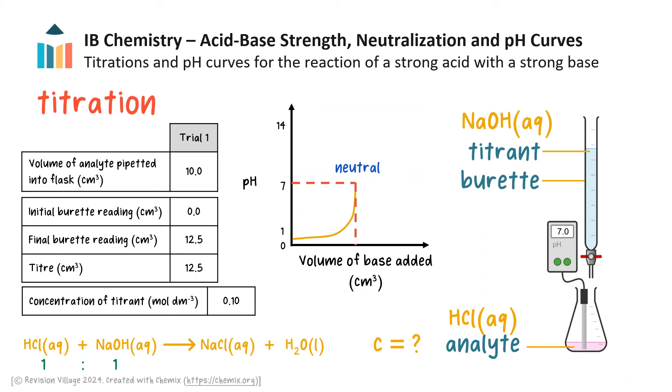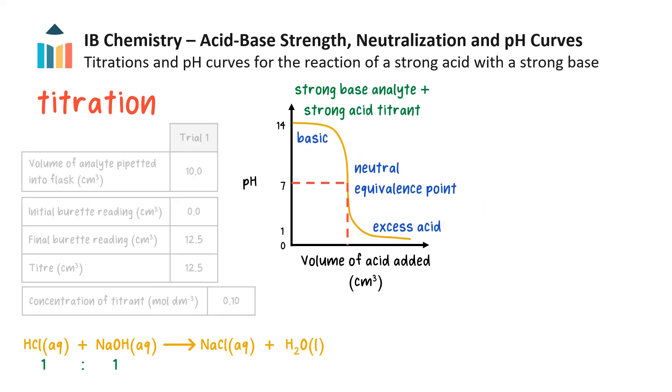The pH at equivalence point will be 7 or neutral for the reaction of a strong acid with a strong base. Notice on the curve there is a sudden increase in gradient as equivalence point is reached. Then, if excess base titrant is added and the pH is recorded, the curve would extend like this. This is the typical shape of a pH curve for the titration of a strong acid analyte with a strong base titrant. Incidentally, if the analyte was a strong base and the titrant a strong acid, the curve would look like this, starting with a high pH, a neutral equivalence point, and an acidic pH if excess acid is added.